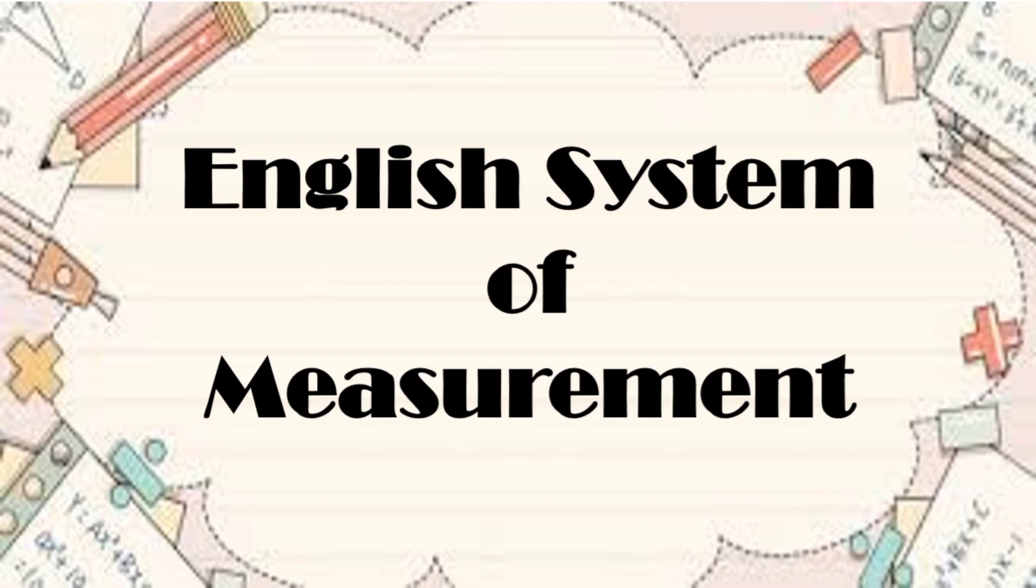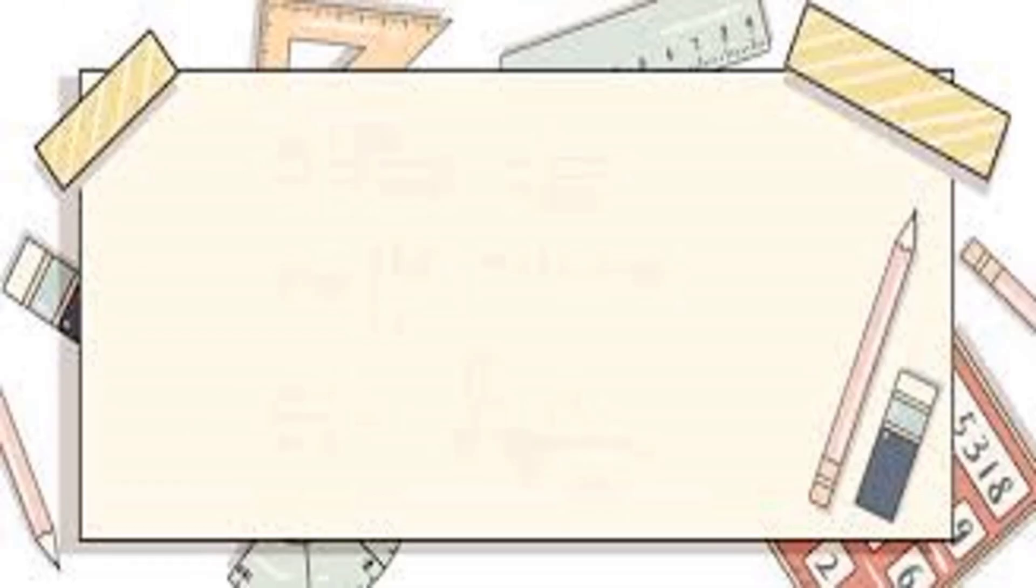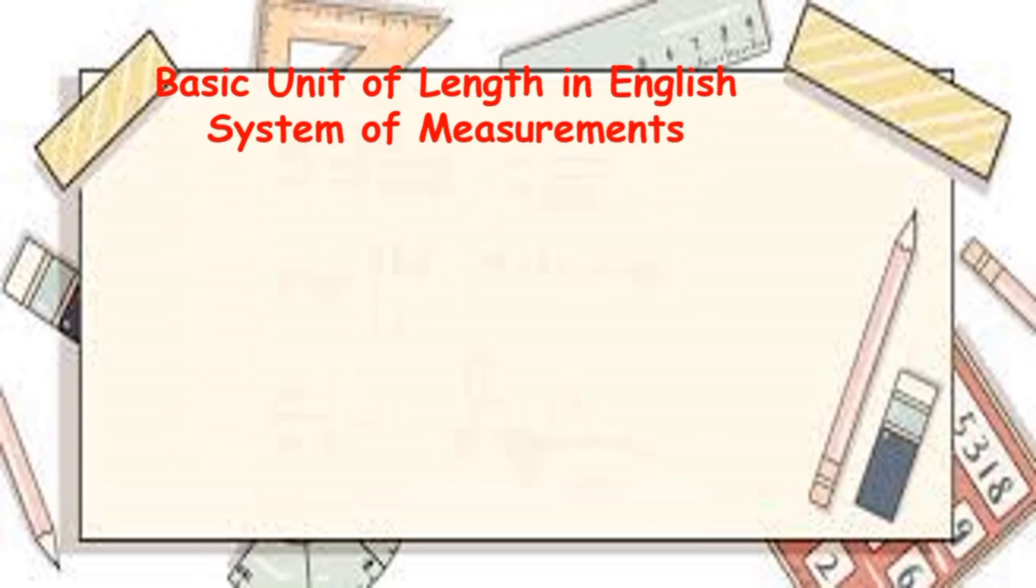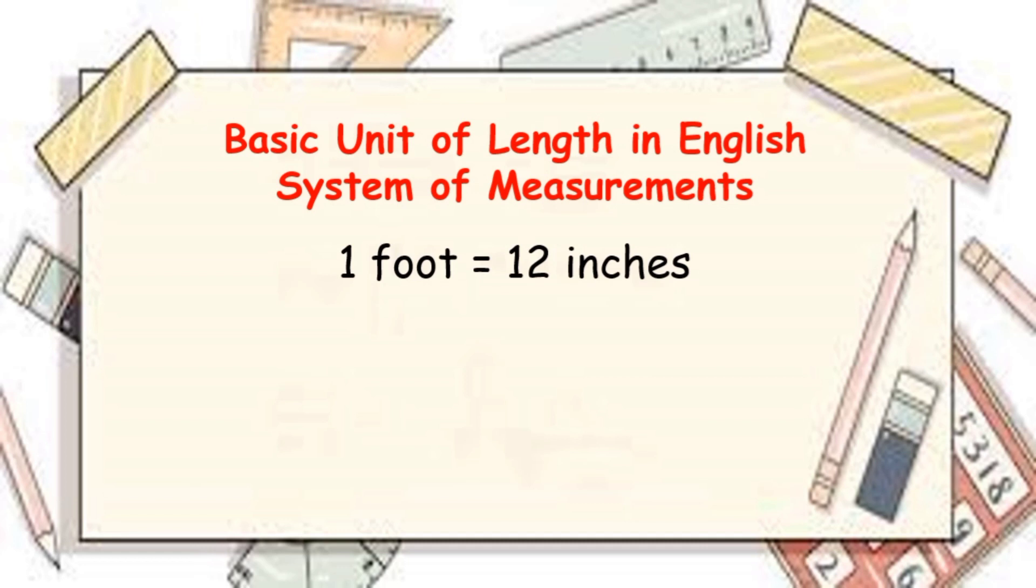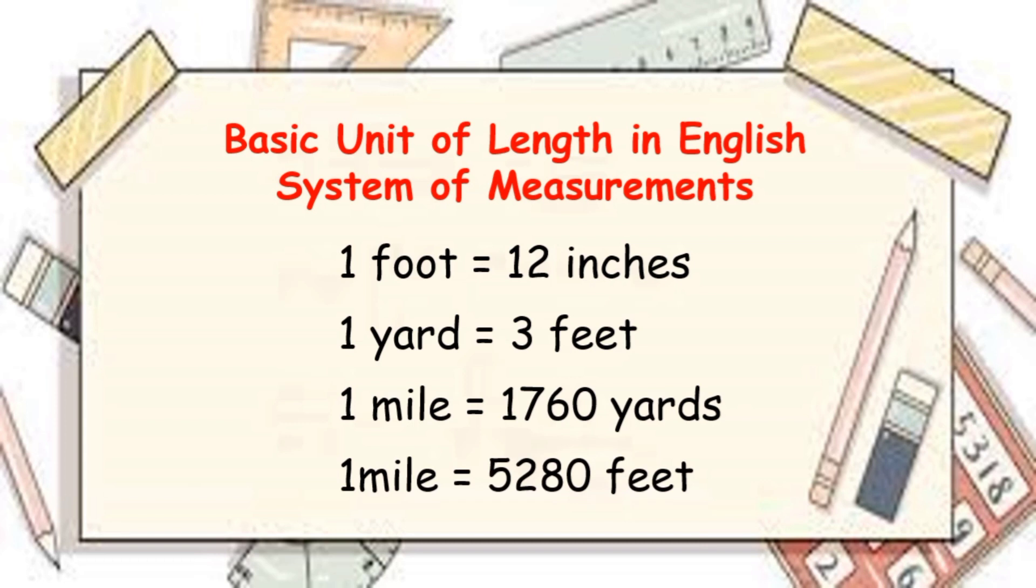These are the basic units of length in the English System of Measurement. Remember that 1 foot is equal to 12 inches, 1 yard is equal to 3 feet, 1 mile is equal to 1760 yards, or also 1 mile is equal to 5,280 feet. Remember this for us to easily convert one unit to another.